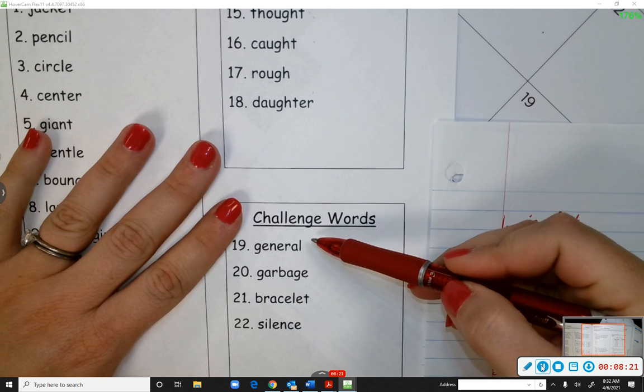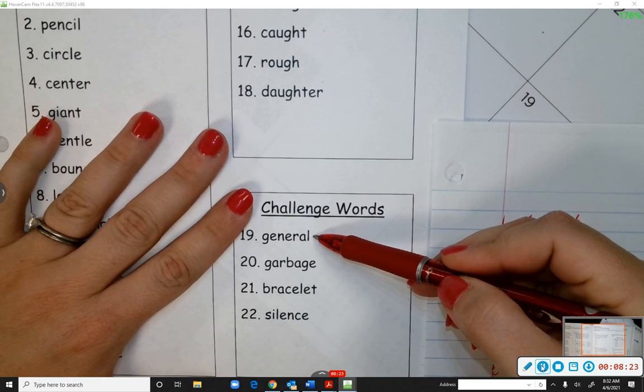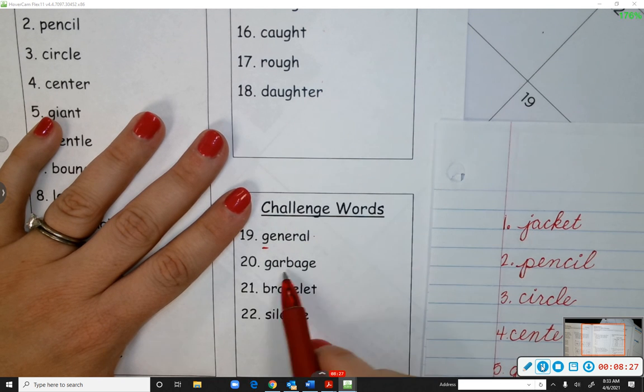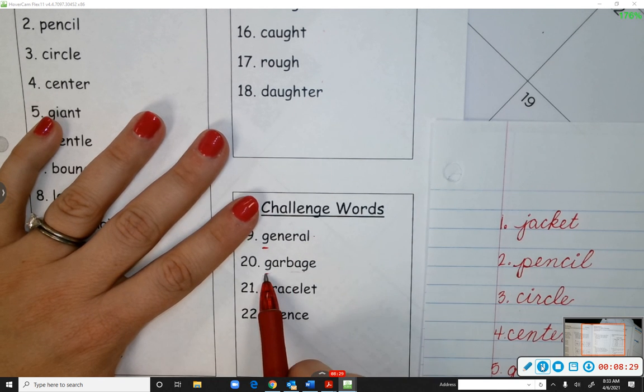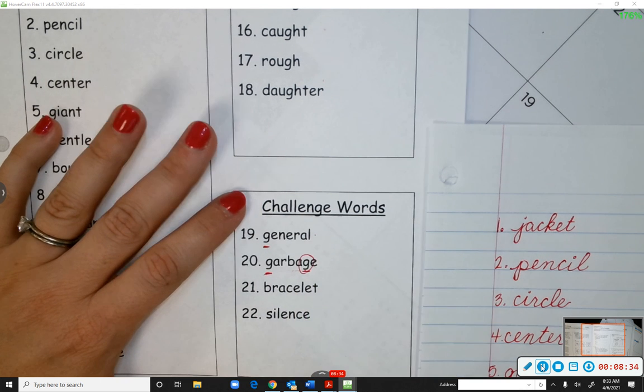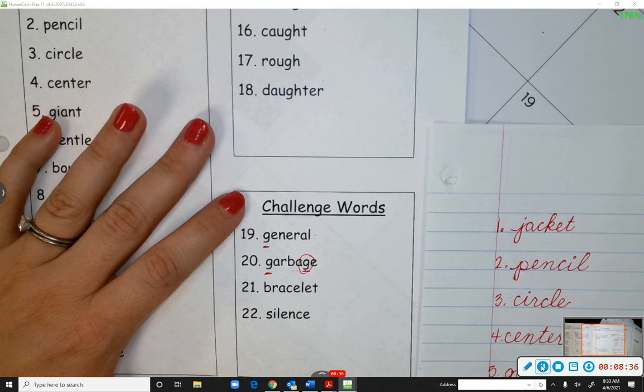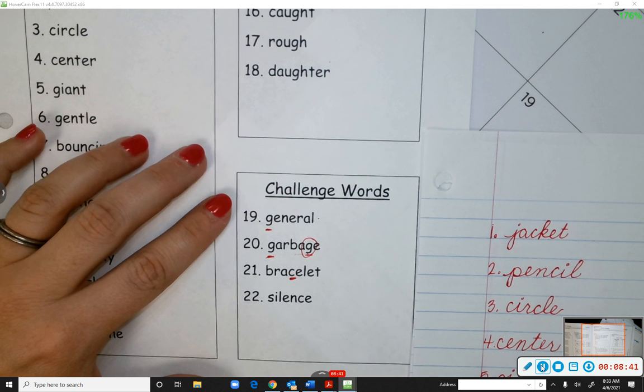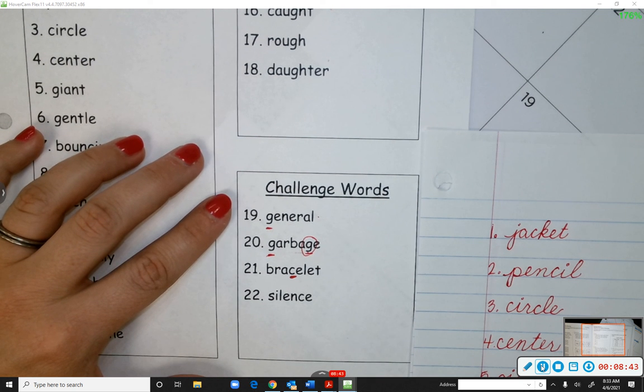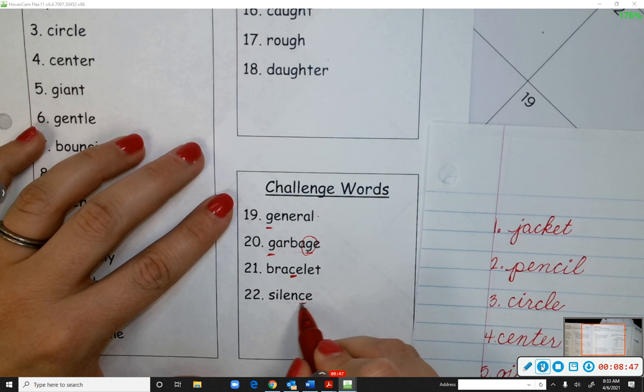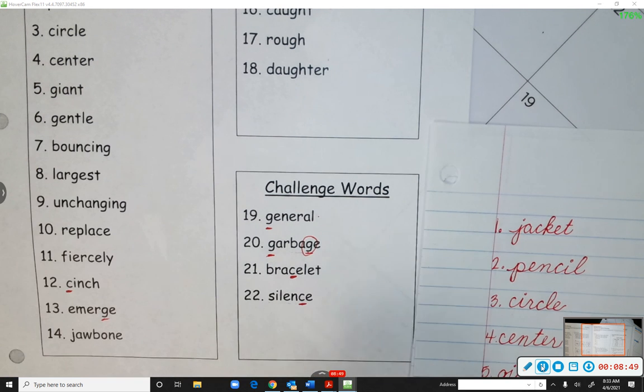And then your challenge words, general. So that J sound, general. Garbage. This one does not make the J sound. It's the second one that makes the J sound. Garbage. Okay? Bracelet. So again, C making the S sound. And twenty-two, silence. C is making the S sound. Okay?